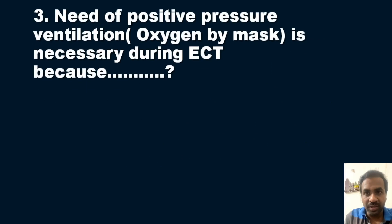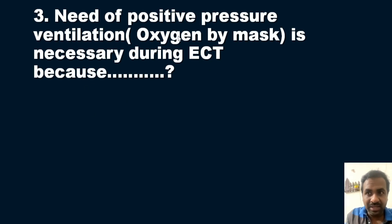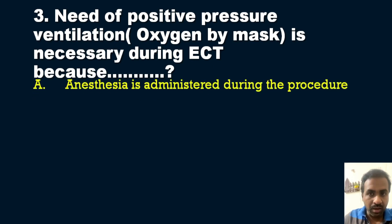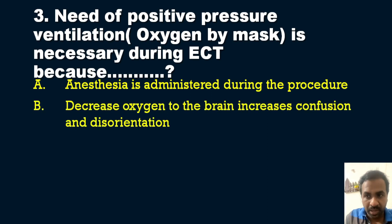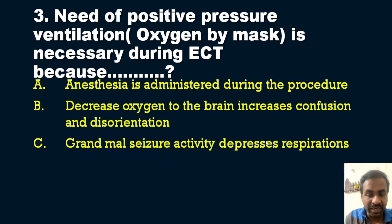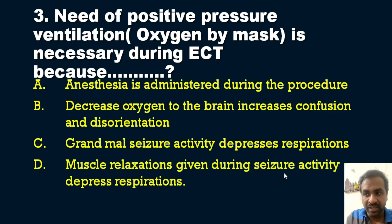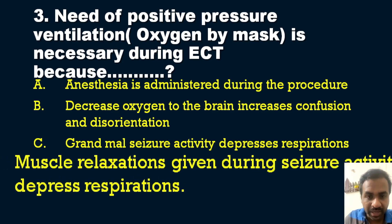The third question is again from psychiatry: Why is positive pressure ventilation or oxygen by mask necessary during ECT? The options are: A) Anesthesia is administered during the procedure, B) Decreased oxygen to the brain increases confusion and disorientation, C) Grand mal seizure activity depresses the respiration, D) Muscle relaxants given during seizure activity depress the respiration.